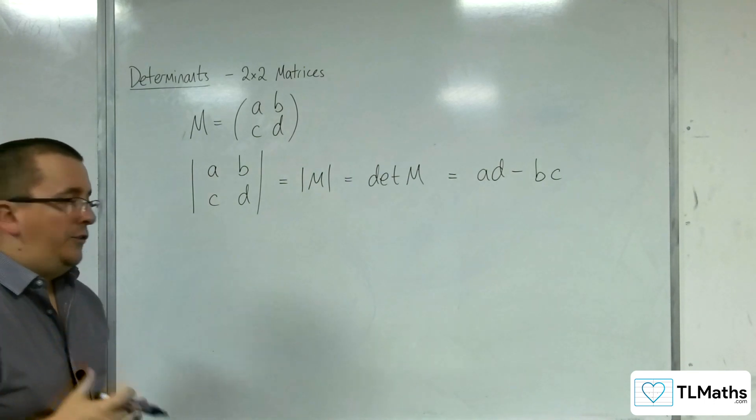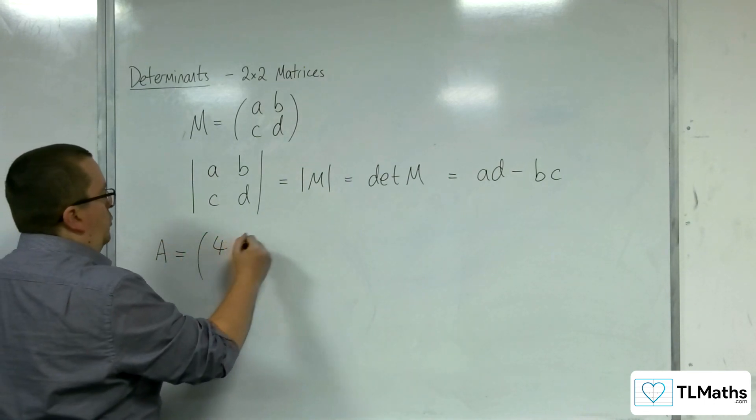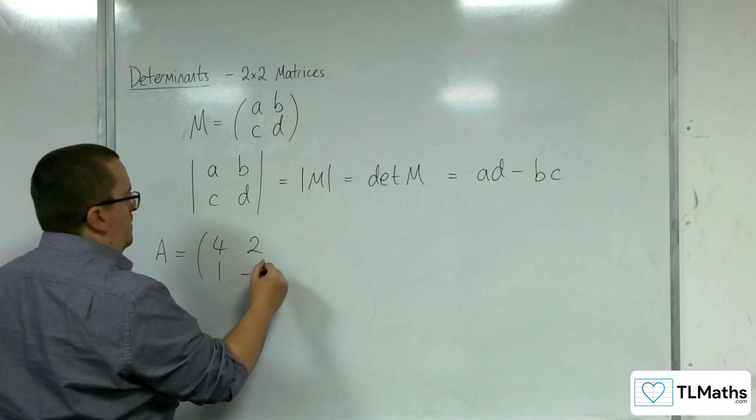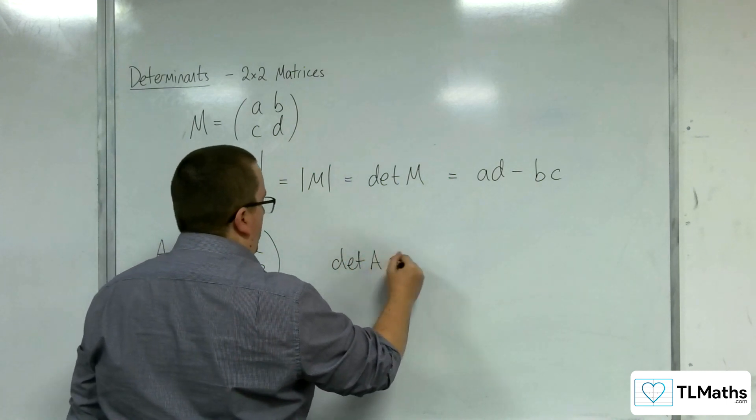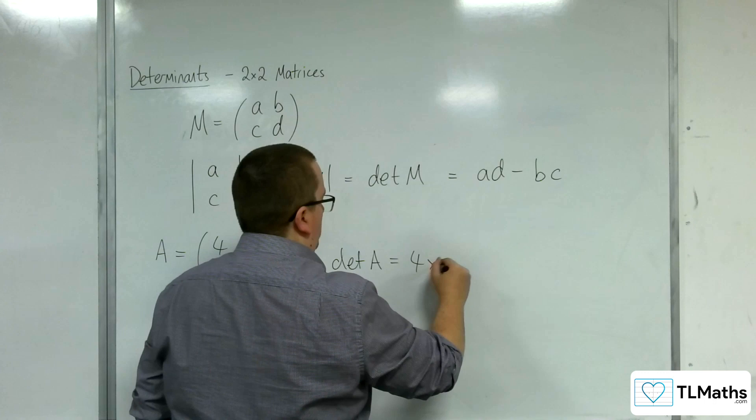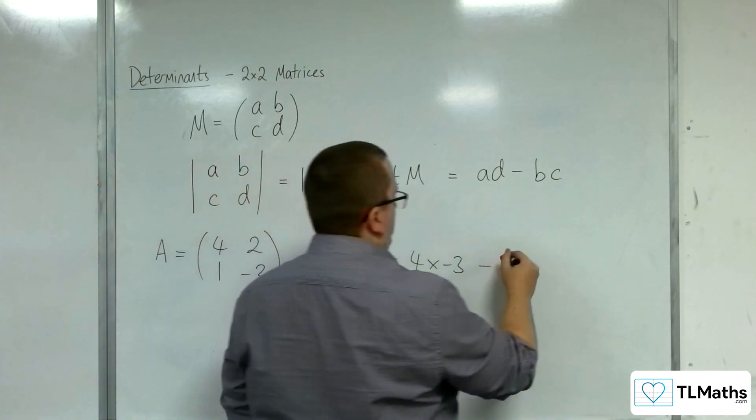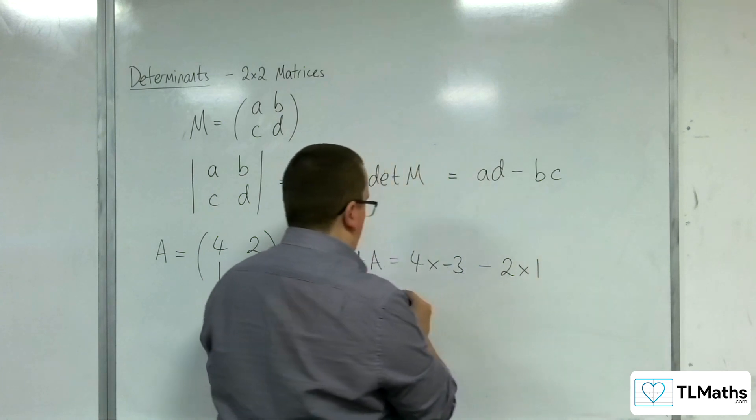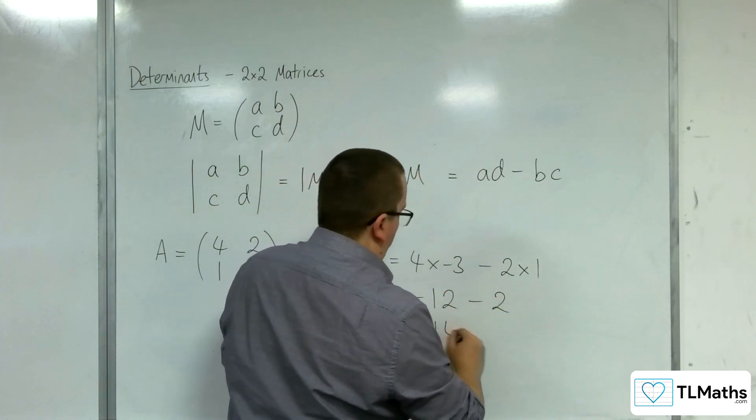So, an example, if you had a matrix A that was 4, 2, 1, minus 3, then the determinant of the matrix A is 4 times negative 3, take away 2 times 1. So, negative 12, take away 2, and so minus 14. And that would be the determinant of your matrix.